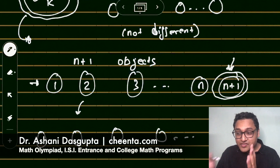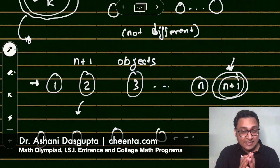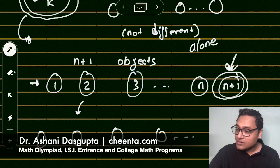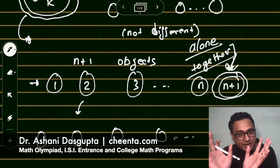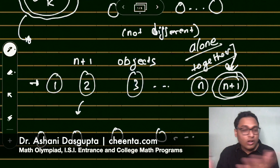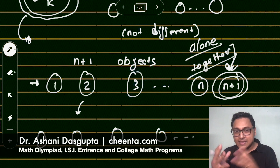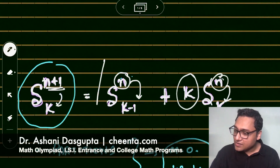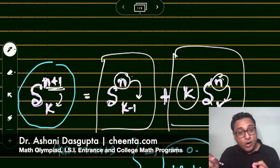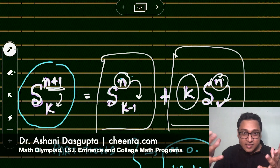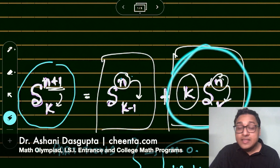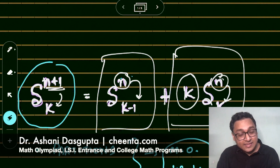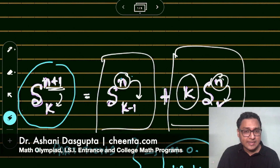When we distribute the n+1 objects into the k bags, the (n+1)th object could either be alone in a bag, or it could be together with some other objects. These are the two different cases — they cannot happen together, and nothing else can happen. In the recursion, these two cases correspond to the 'alone' case and the 'together' case.